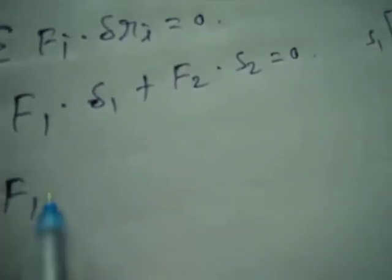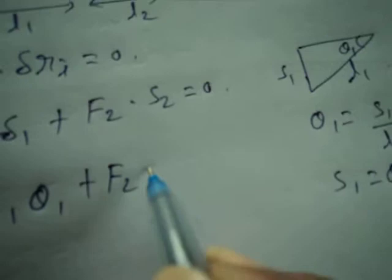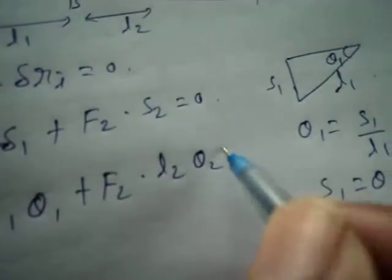So F1 dot L1 theta1 plus F2 dot L2 theta2 that is equal to 0.